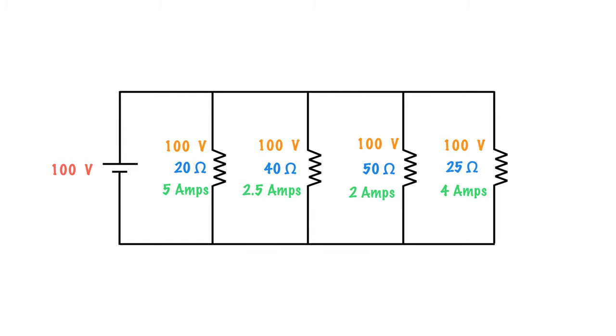So what we're going to determine now is our overall current in this circuit. The law of current states that the current entering a node has to be the same as exiting a node, and we're going to add all these currents up. So we add 5 plus 2.5 plus 2 plus 4 to get our total current, which is 13.5 amps.